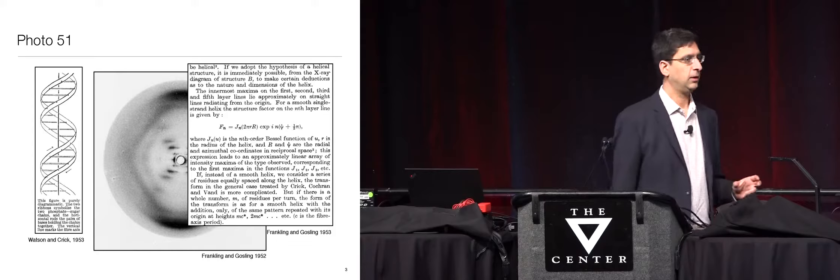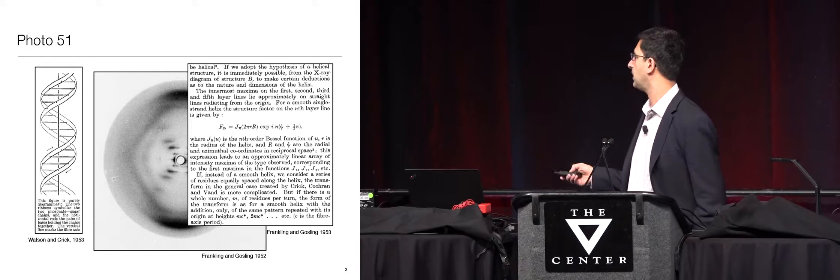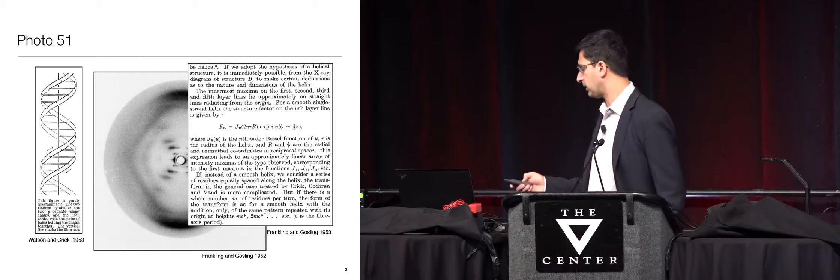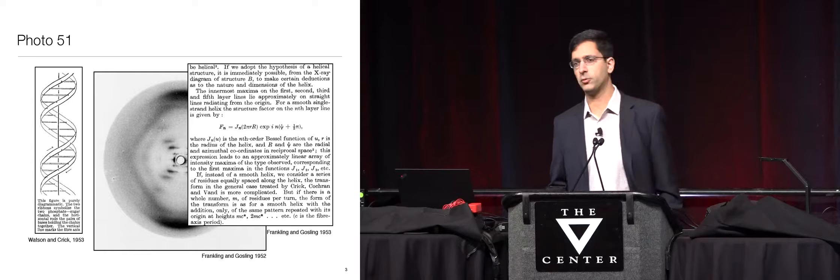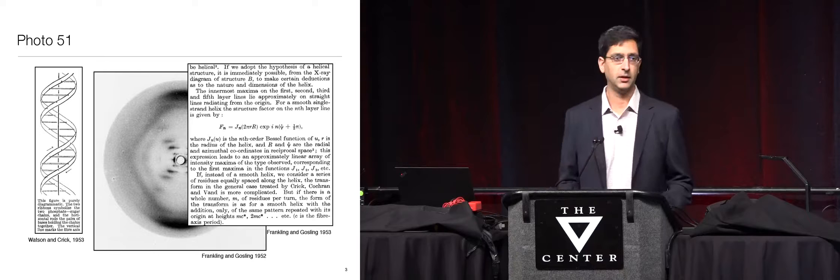By the 1950s, Rosalind Franklin had become an expert applied mathematician in Fourier analysis. Her paper with Gosling, published in the same journal as Watson and Crick's double helix paper, shows they were doing Fourier analysis to understand this image. At the same time, there was a different philosophy about understanding X-ray crystallography — a more cartoonish approach — and this is the idea that ultimately led to the model that Watson and Crick put together using Franklin's photograph.